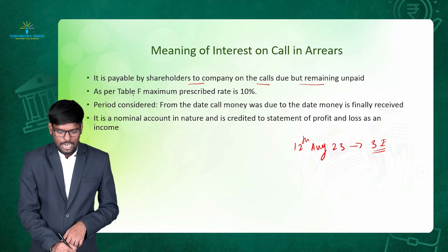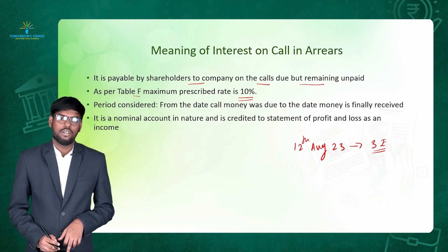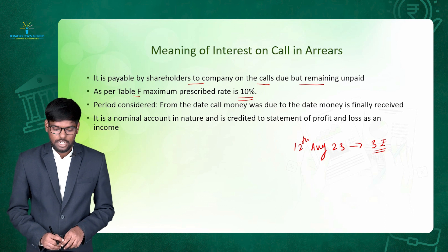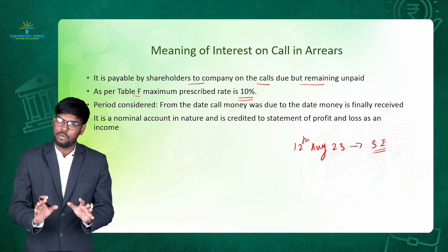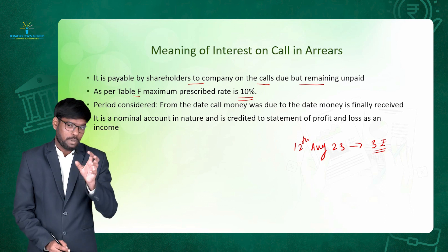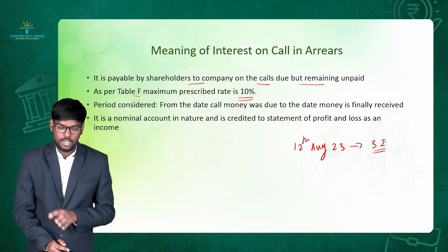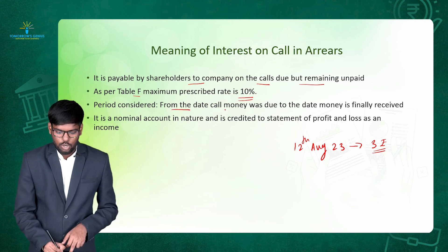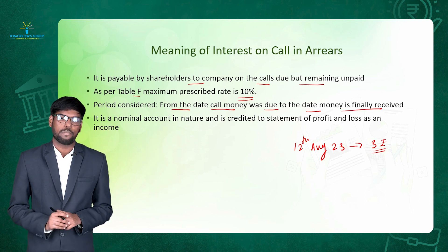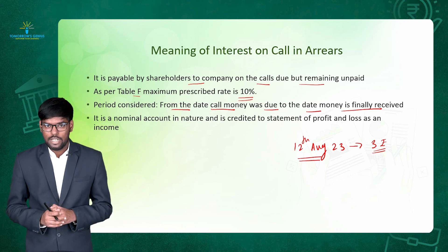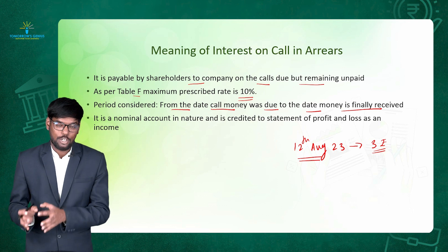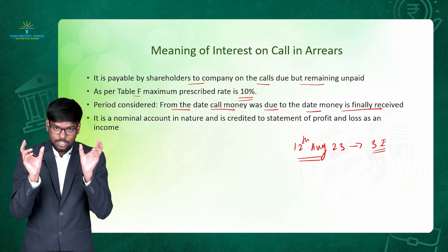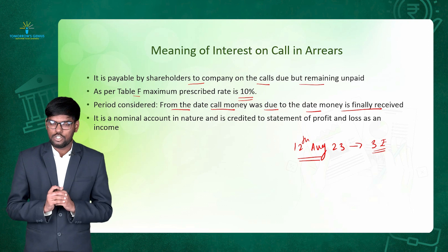As per Table F, the maximum prescribed rate is 10%. So as per the Companies Act 2013, the maximum rate of interest when there is a call in arrears is 10%. The period to consider for calculation of interest on call in arrears is from the date the call money was due to the date the money is finally received. So from 12th of August 2023 up to the actual date on which the shareholder makes payment, we calculate interest on call in arrears.